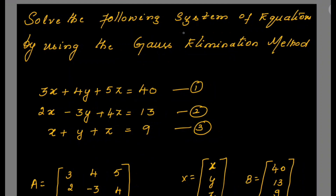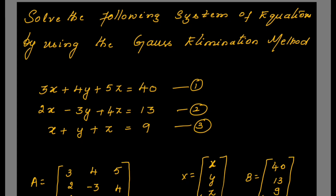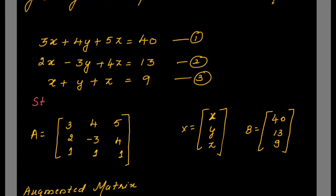The question is: solve the following system of equations using the Gauss elimination method. There are three equations given, numbered 1, 2, 3. The first step is to write down the matrices.